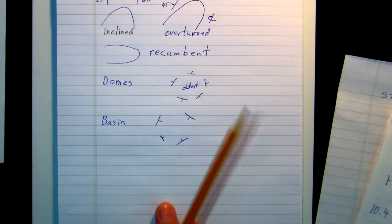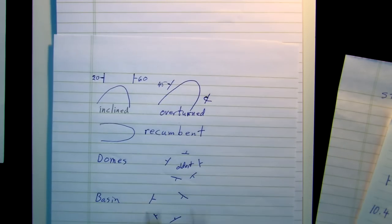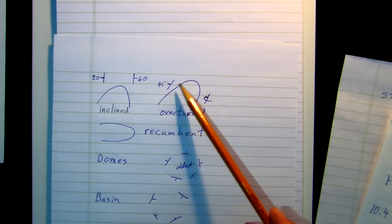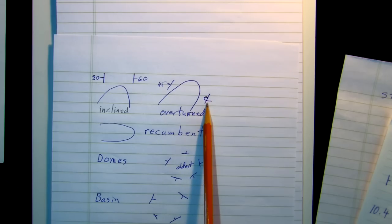And here we can see this one's actually been overturned. This one's gone past the vertical. This is the symbol we use for an overturn layer.